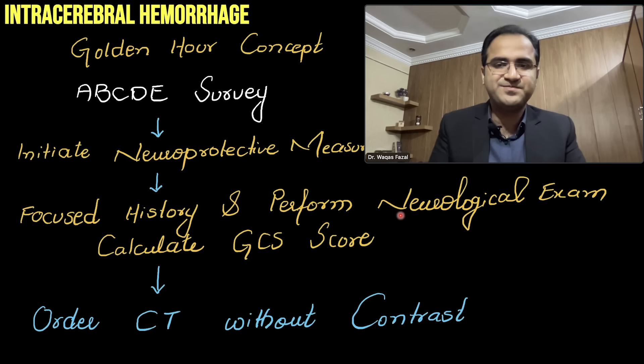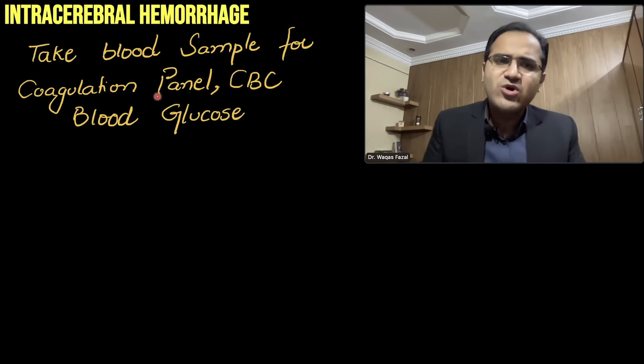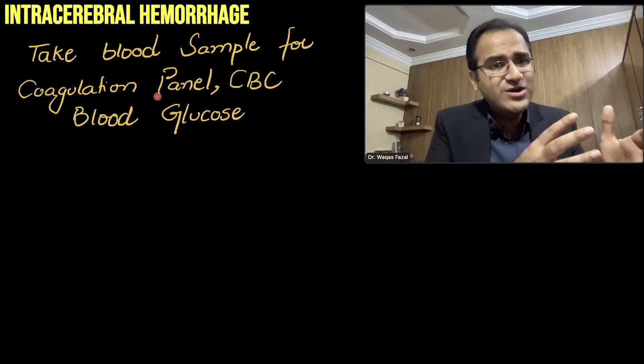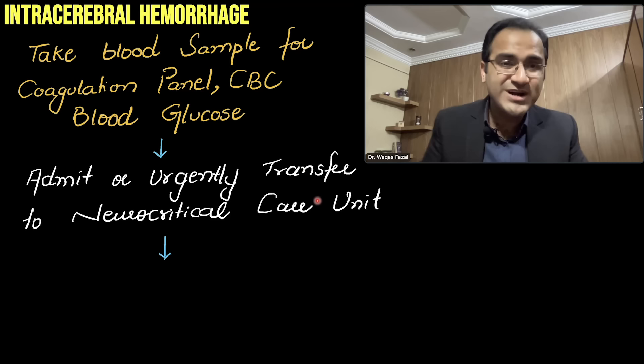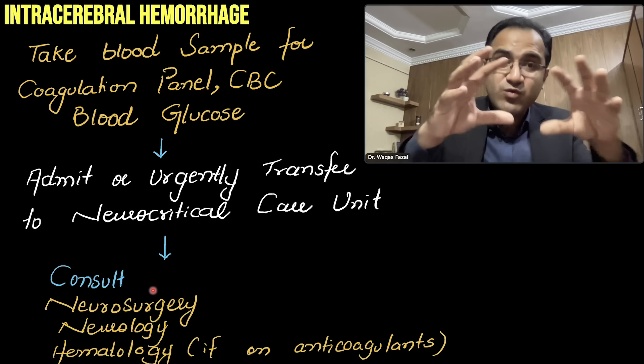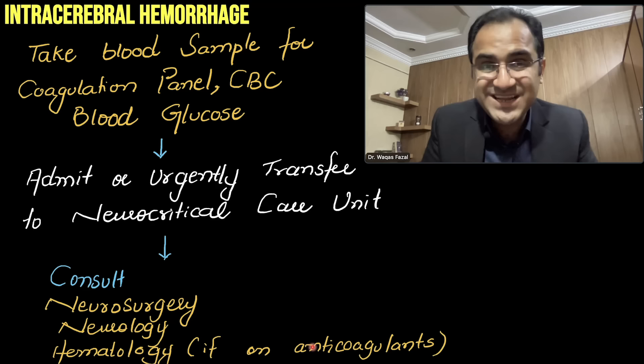After the ABCD approach and neuroprotective measures, order a CT scan without contrast and take blood for a coagulation panel — many coagulopathies and anticoagulant medications can cause ICH. Also order a CBC and blood glucose. Admit or urgently transfer the patient to a neurocritical care unit, and consult the neurosurgery department to determine if hematoma evacuation is needed. Consult neurology and hematology if the patient is on anticoagulants.